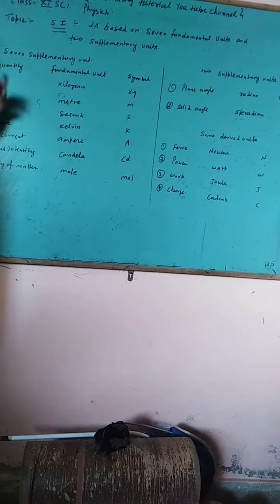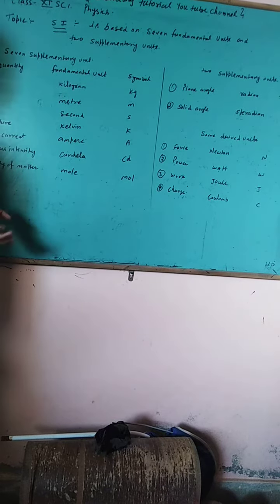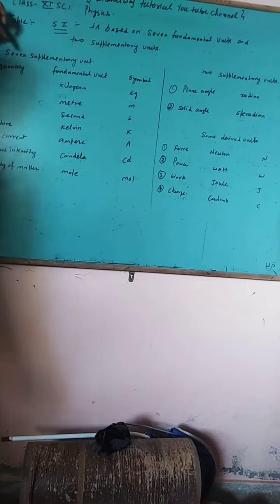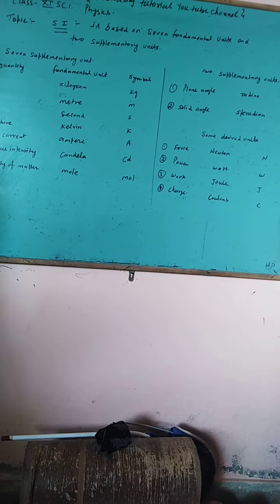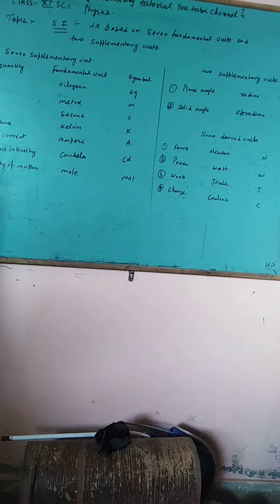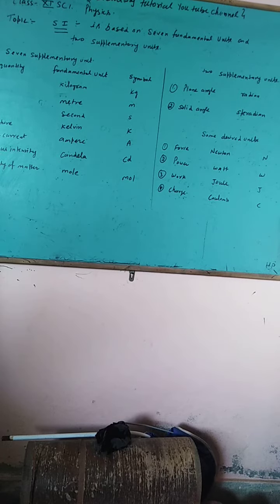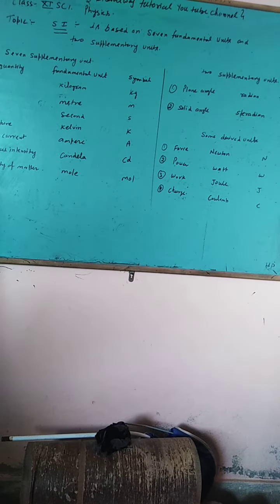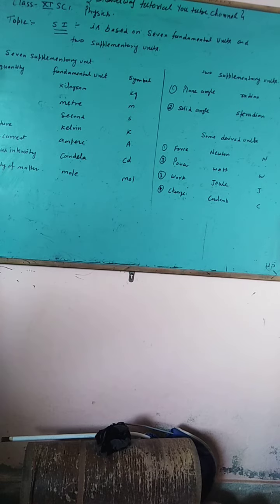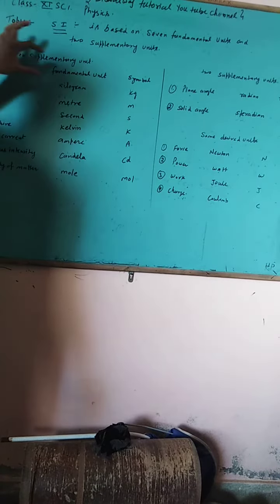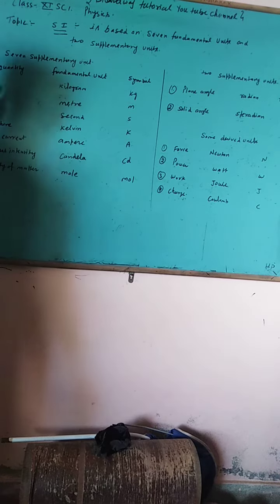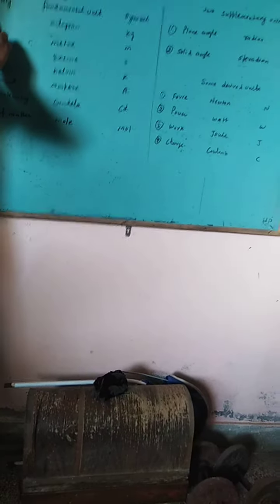Table for fundamental units is given on the blackboard. Seven fundamental units - the physical quantities are: mass, length, time, temperature, electric current, luminous intensity, and quantity of matter.